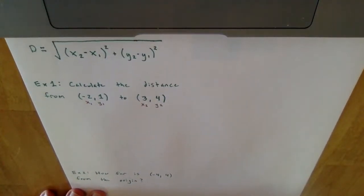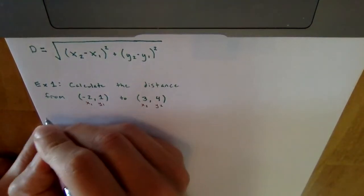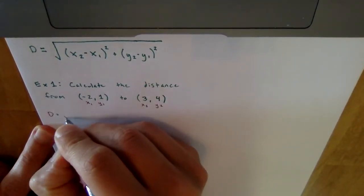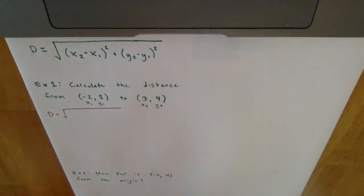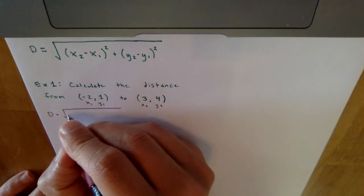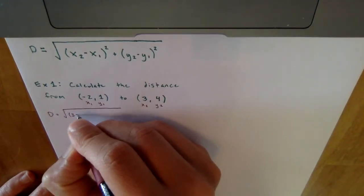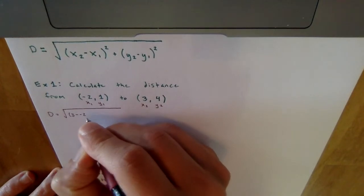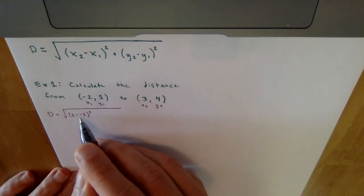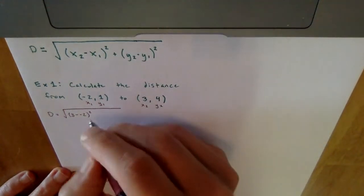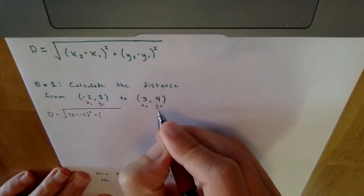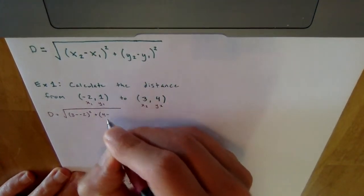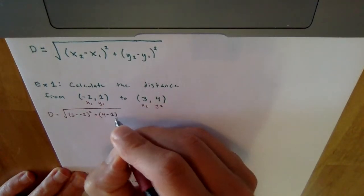Now I'll reference the formula and start plugging in. d equals the square root of x2 minus x1, so that's 3 minus negative 2 — notice right away there's a keep-change-change — then plus y2 minus y1, which is 4 minus positive 1, all squared.